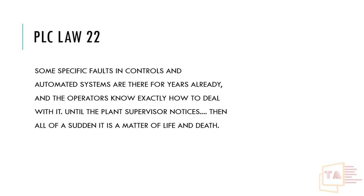Some specific faults in automated systems are familiar to operators — they already know exactly how to deal with them until the supervisor notices. The operator will try to keep production running at maximum level, increasing feed rate and speed to the maximum permissible. That is why you have to be careful — the machine's life depends on running within safe limits.